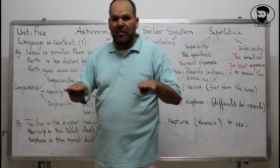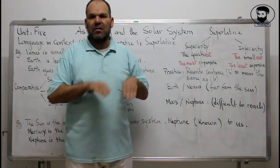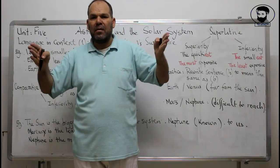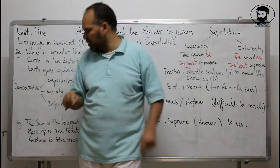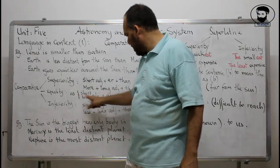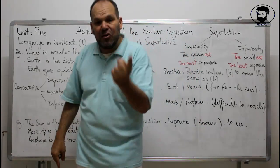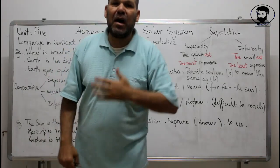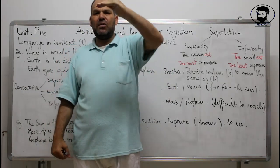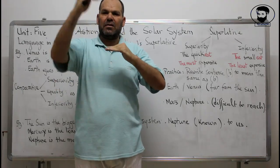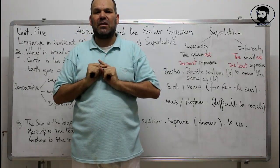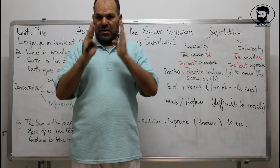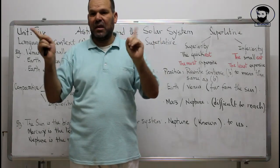For equality, you use AS...AS — and there is no difference between long or short adjectives; the structure is the same. For example: 'I am as tall as you' — where 'tall' is a short adjective. Or 'I am as intelligent as you' — where 'intelligent' is a long adjective. The structure is identical: AS + adjective + AS.